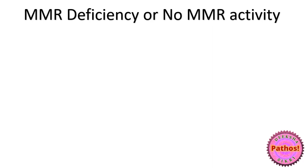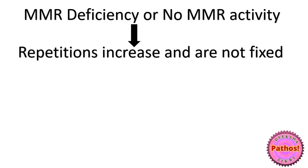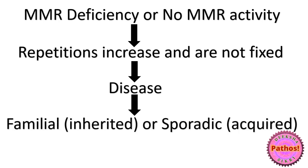When MMR is not able to work during replication, the repetitions tend to increase and the mistakes are not fixed. This leads to a disease which could be familial if it's inherited, or sporadic if it's acquired.